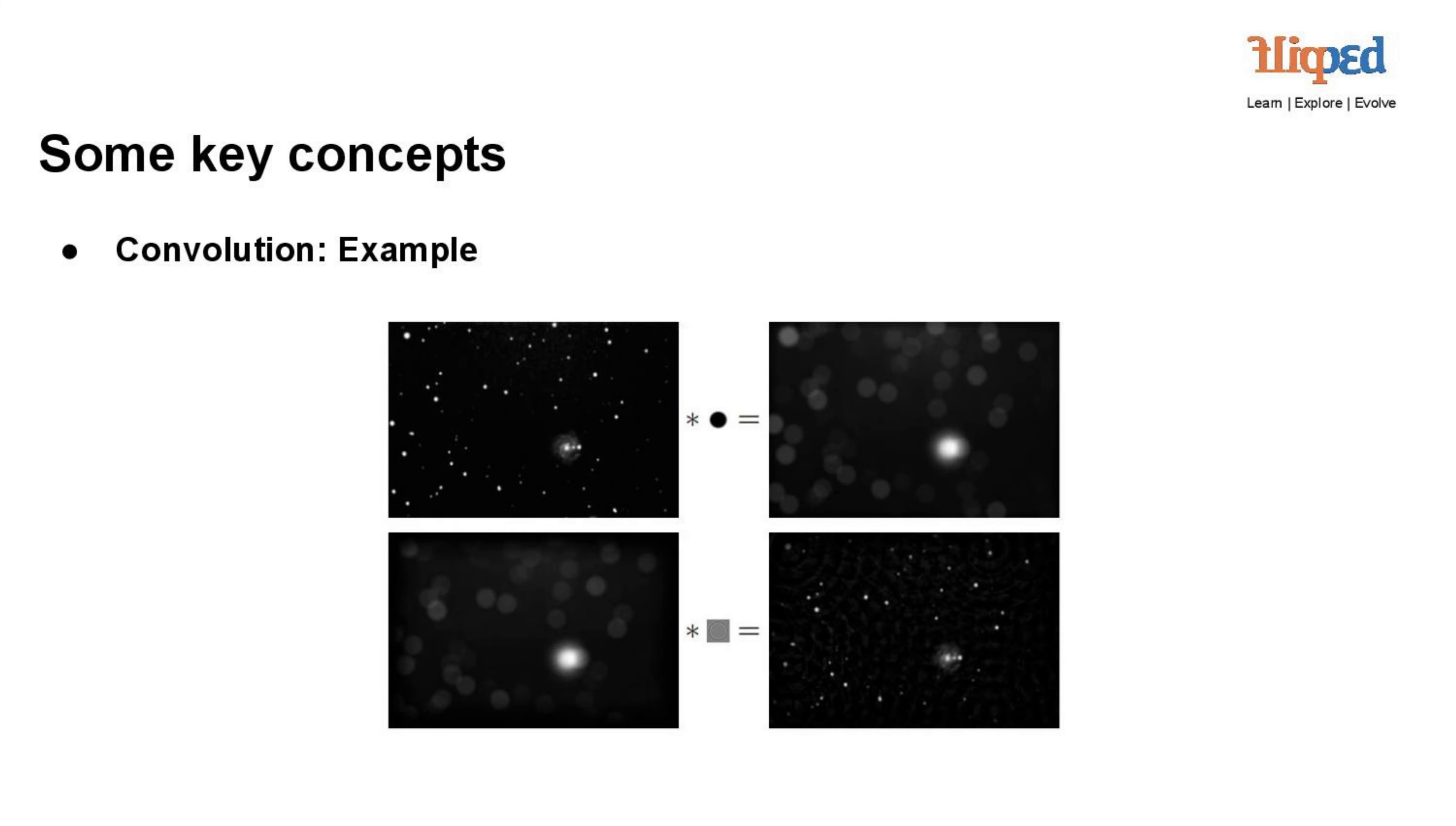Restored clear image: The final result of the convolution with the grayscale kernel is a restored, clearer version of the original image of stars. The blurriness introduced by the dark circle convolution is mitigated, and the stars become more distinct once again.